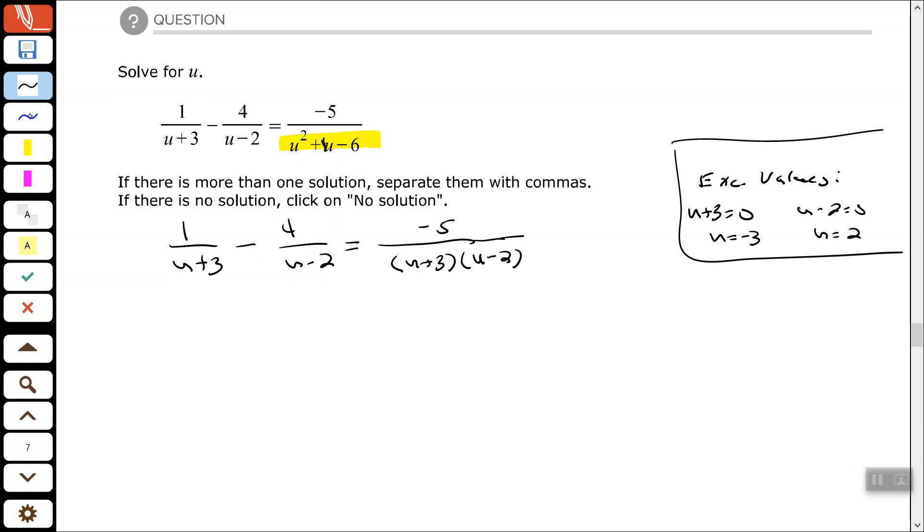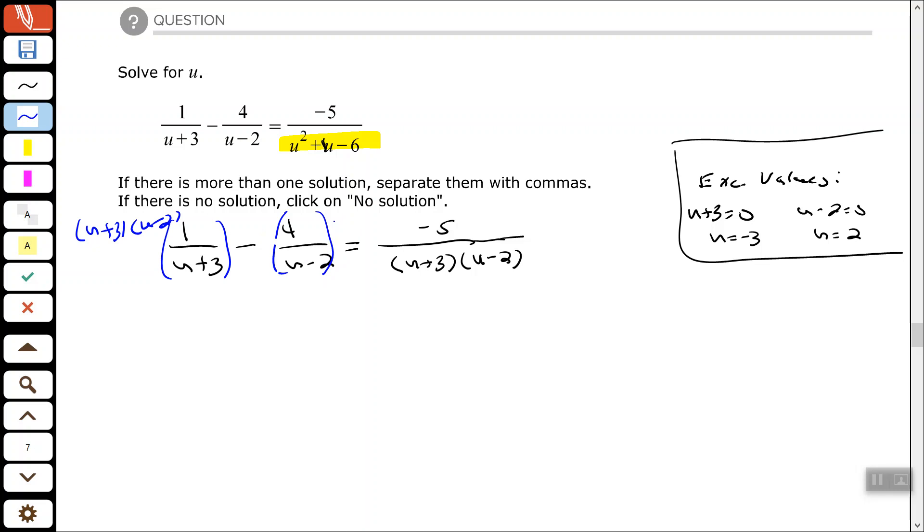So my answers or solutions could be anything else besides those two numbers. Those two factors also happen to be our least common multiple of our denominator. So we're going to multiply everything by u plus 3 times u minus 2.